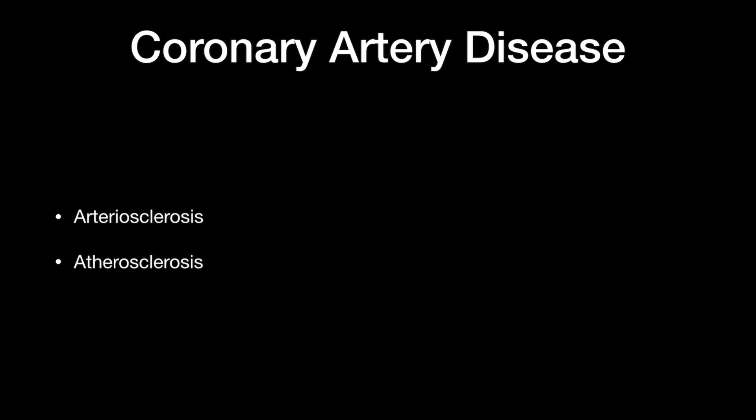With coronary artery disease there are two concepts we need to understand. One is arteriosclerosis — the thickening and hardening of the small arteries in the body, what we call hardening of the arteries. A version of that is atherosclerosis, which is the buildup of fatty deposits inside the arteries. If it happens in the coronary arteries we call it coronary artery disease, but it can happen in blood vessels throughout the body.